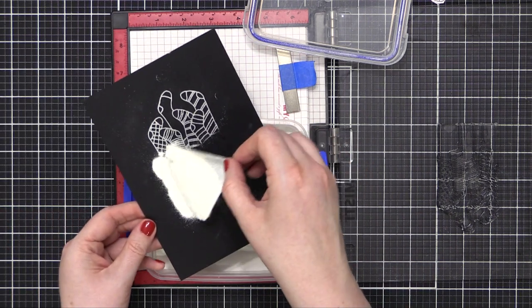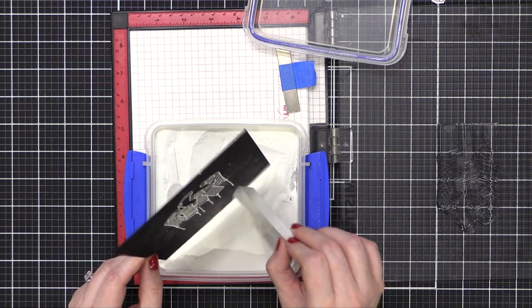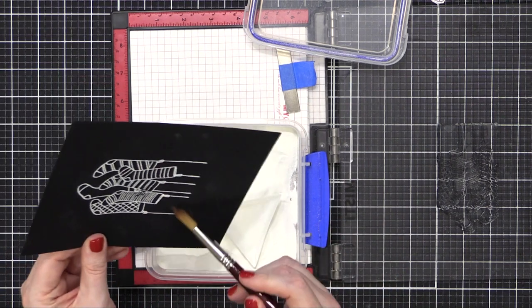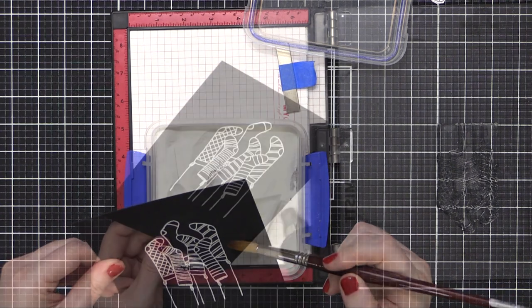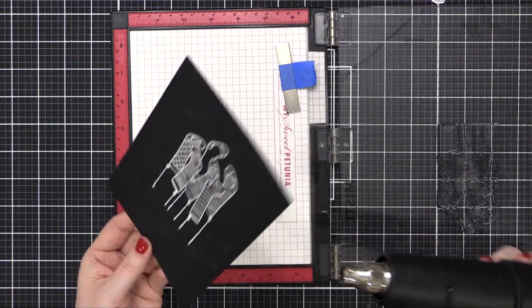After I had all the embossing powder on there, I just used a dry paintbrush to sweep away any of the powder that was on the outer edge.